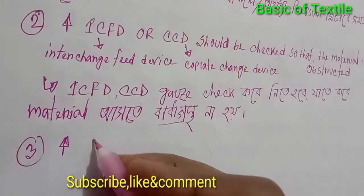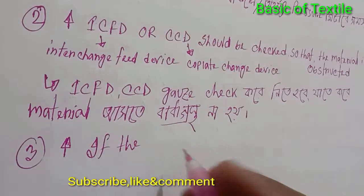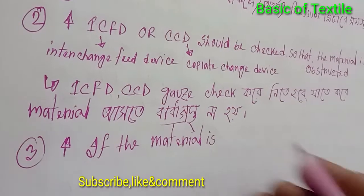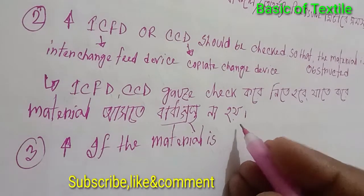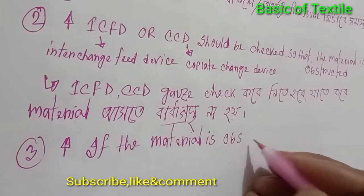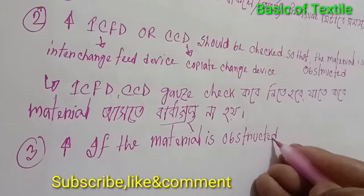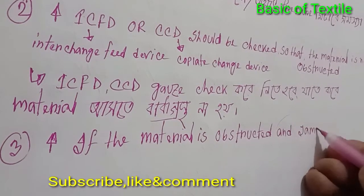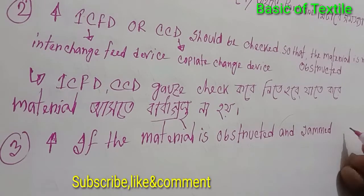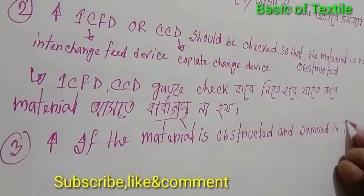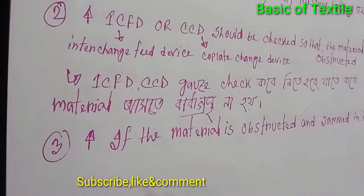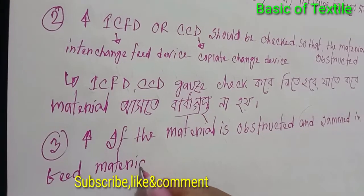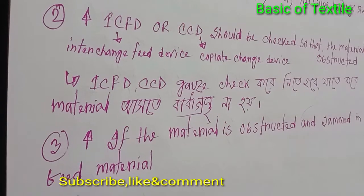Number 3: If the material is obstructed and jammed in its feed material — if feed material becomes jammed — this can also cause the drop deviation alarm in the carding machine.